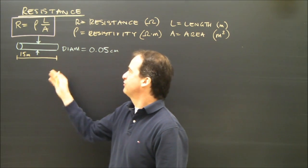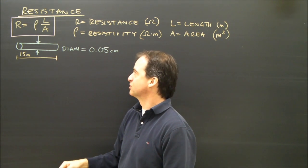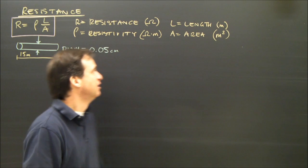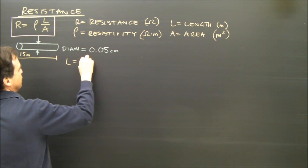I've got a piece of copper wire, 15 meters long. It has a diameter of 0.05 centimeters, and I want to find out the resistance. So I have to write down what I'm given. Well, I'm given that the length is 15 meters.